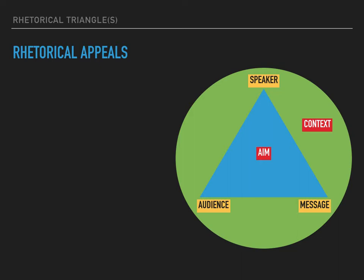The first rhetorical appeal is most closely tied to the speaker, and it is ethos. Ethos has its connections to the word ethics, but it's about the way a speaker demonstrates or develops their own credibility, authority, or trustworthiness.